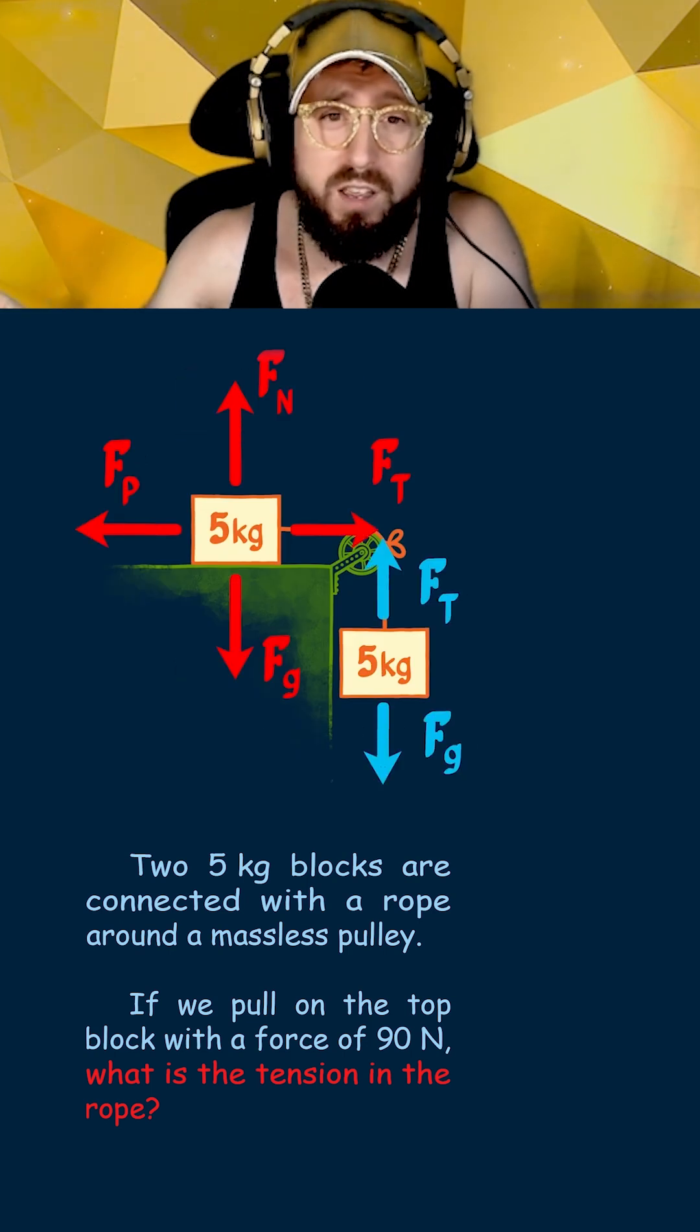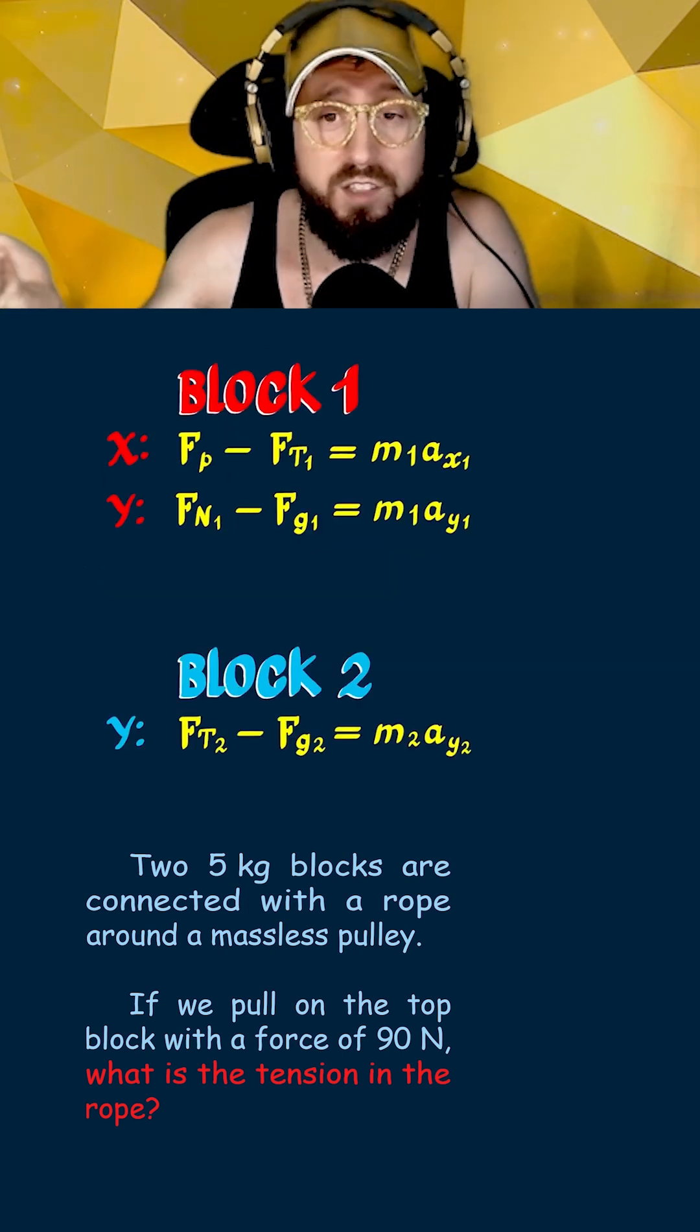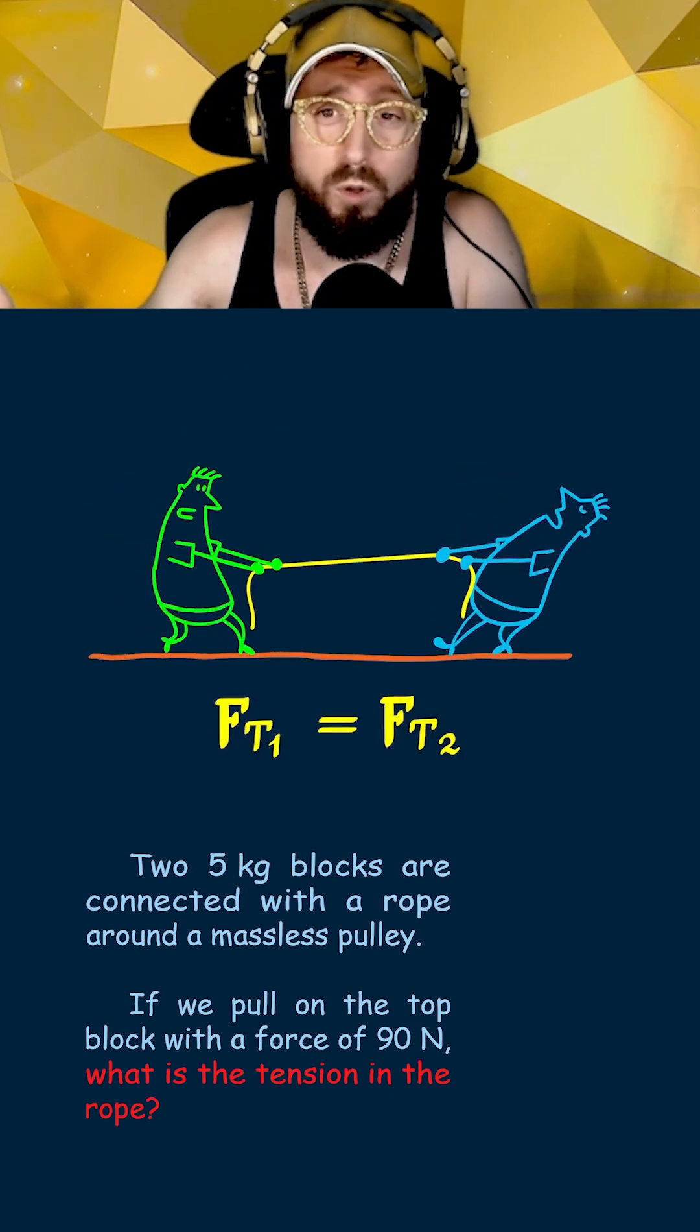The other bit of physics we need to remember is that the force of tension from the rope is the same for each block. The only difference is that the forces point in opposite directions. This makes sense because of Newton's third law, which talks about equal and opposite forces.